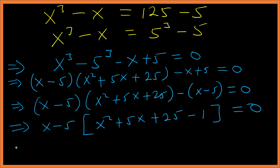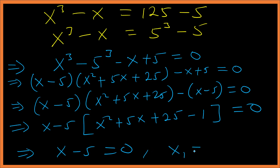By the zero product property, x - 5 = 0, therefore our first solution is x = 5.